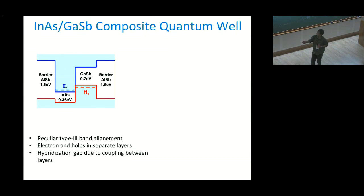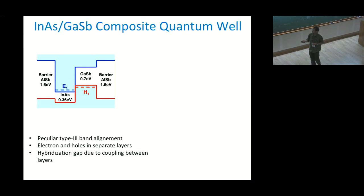The interesting fact here is that the blue line, which is the conduction band, and the red line is the valence band. The indium arsenide conduction band lies below the valence band of gallium antimonide. This is called type-3 band alignment or broken gap alignment.